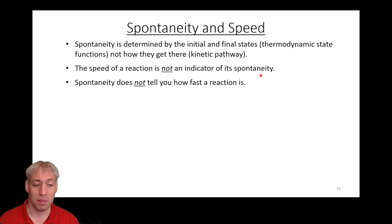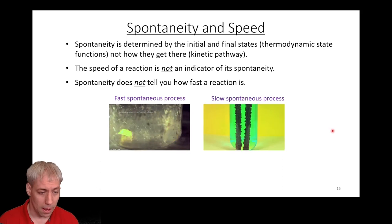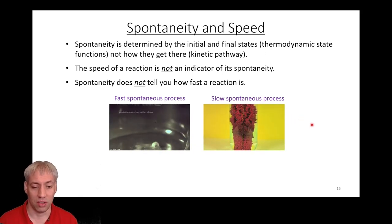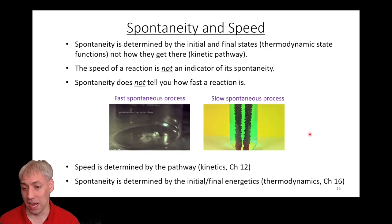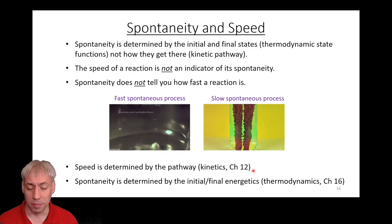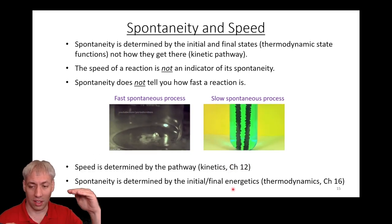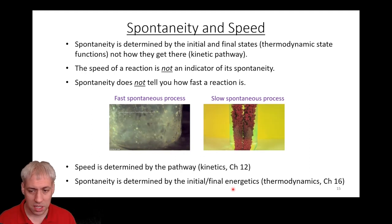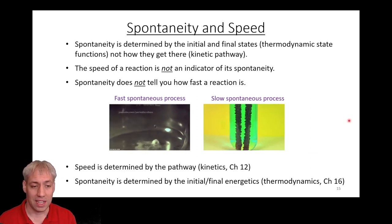Just because something happens fast doesn't mean it's more spontaneous than a slower process, and just because something is spontaneous doesn't mean it'll happen fast. For example, water on sodium metal is a fast spontaneous process. Rust — iron plus oxygen in the presence of water and salts forming iron oxide — is a spontaneous but very slow process. The speed of a process is dictated by the reaction mechanism, kinetic pathway, and activation barrier from chapter 12. Whether something will proceed toward equilibrium is determined by the initial and final energetics — that's thermodynamics.